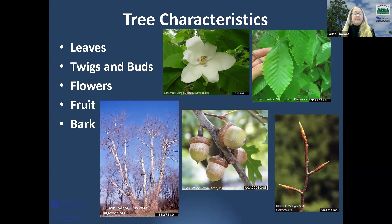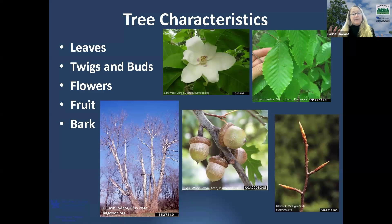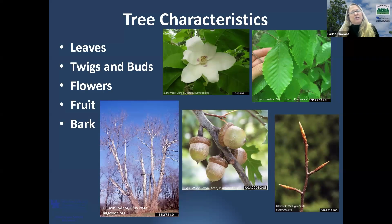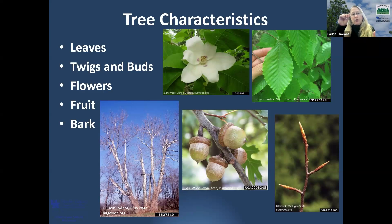Bark can be a really handy characteristic, especially on trees with very distinctive bark like the American sycamore — I always called it the camouflage tree because the bark looks like camouflage. At the bottom it's brown, and as you move up it peels away exposing white underneath, becoming mottled. These are easy to spot in the woods. However, a lot of trees don't have super distinct bark, and it changes as the tree grows. We are going to start with leaves because that's the best place to start.